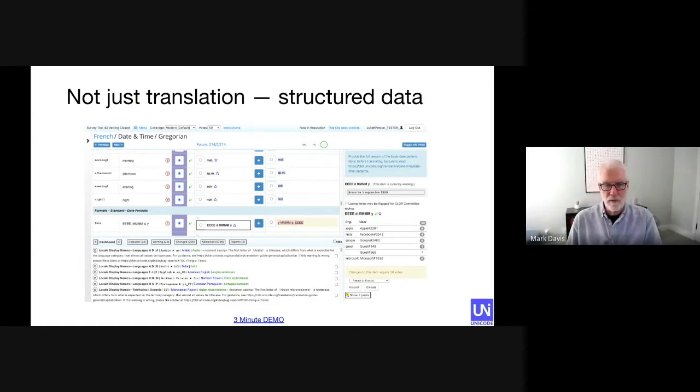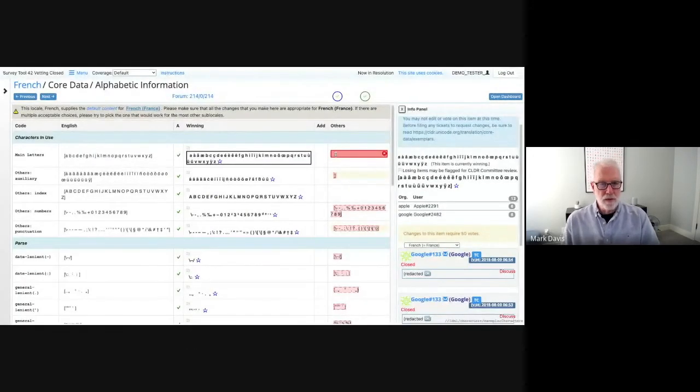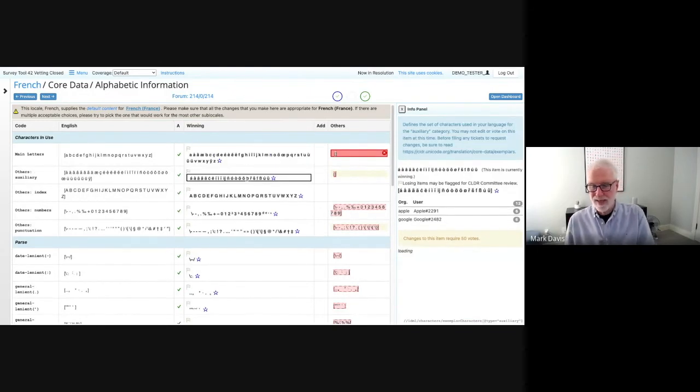Now let's take a look at how this data is gathered. We've got a short demo of what's called the survey tool, which is used to gather the data for these different locales. So here's French, and some of the core data that we gather is what characters are used by each particular language. These indicate the main letters that are used by French. We also have other cases, the auxiliary letters, which are used for loan words, for technical usage, and so forth. Characters that would be in fairly common usage, you'd see them in magazines. There are a variety of other sets of characters that are important to know about the language.